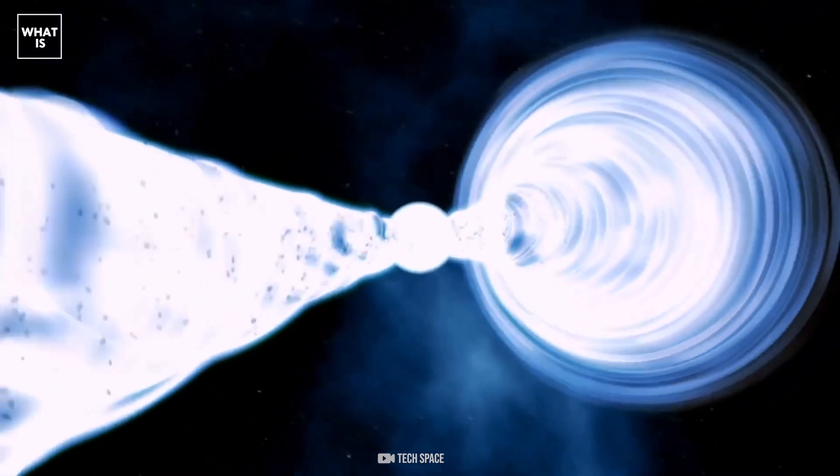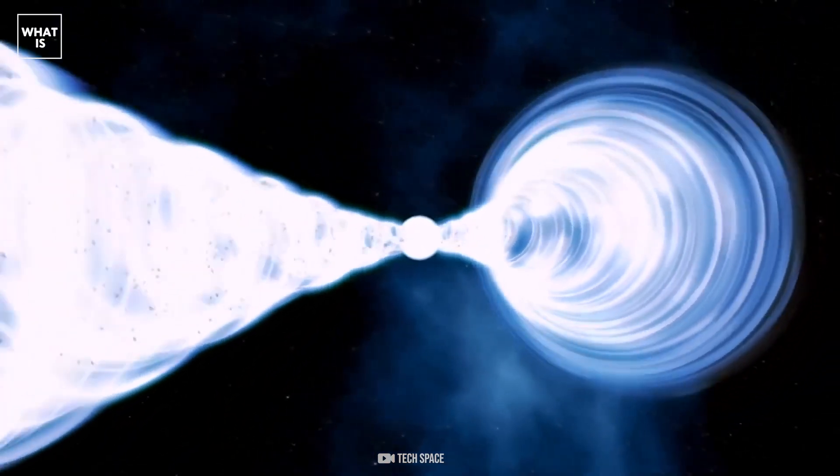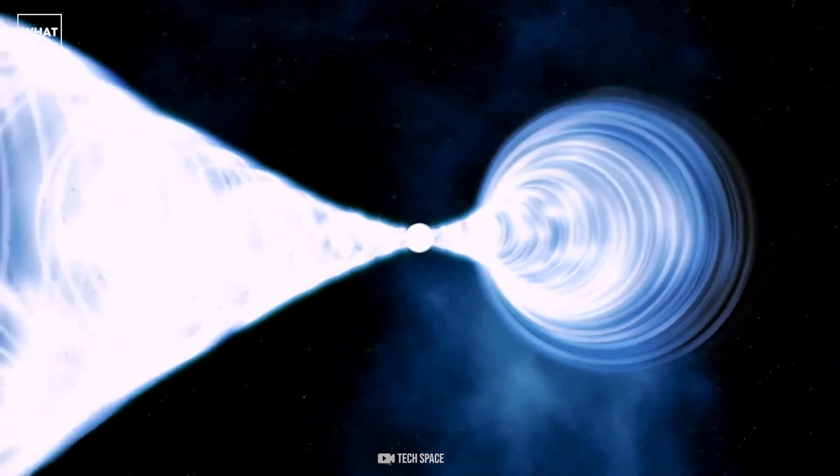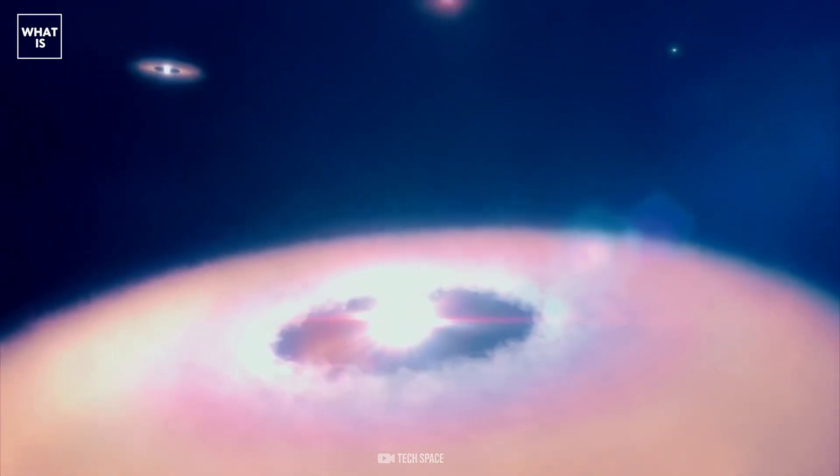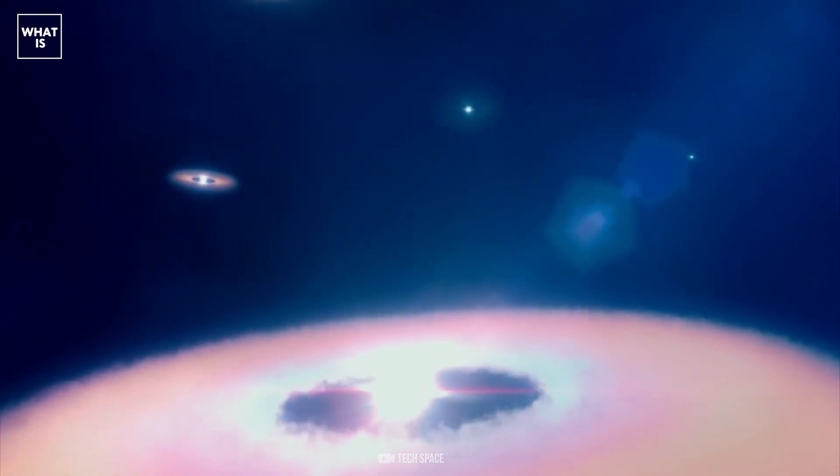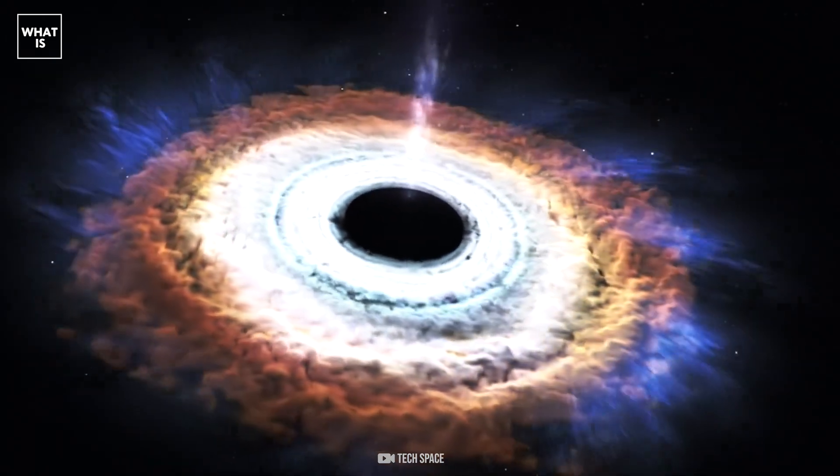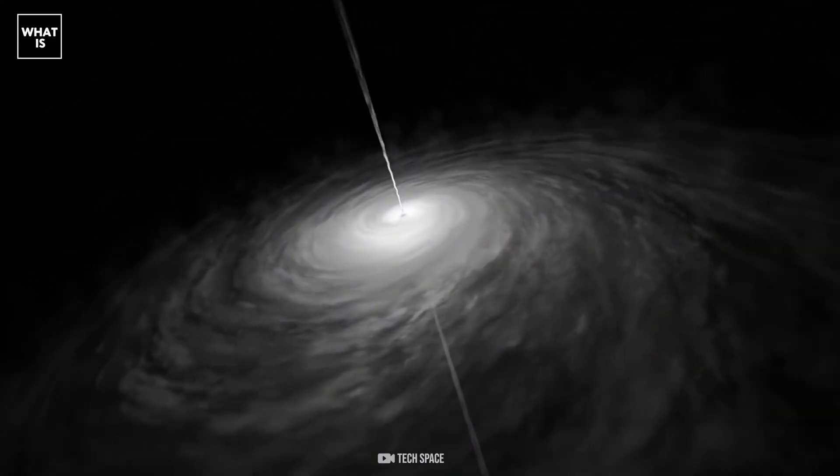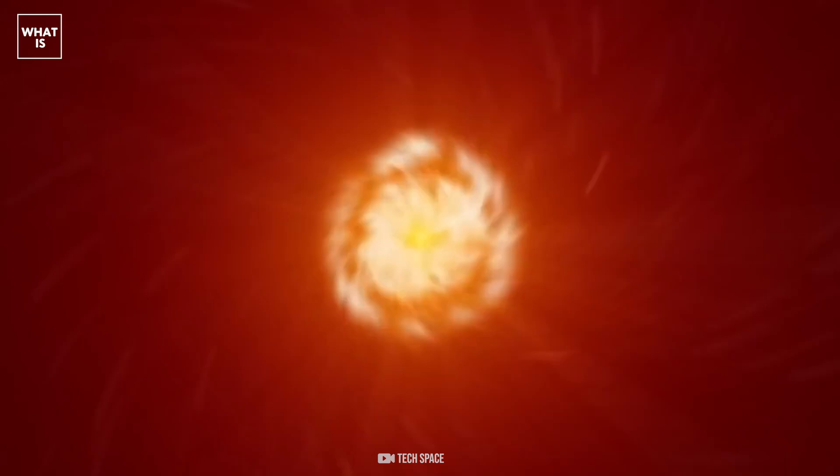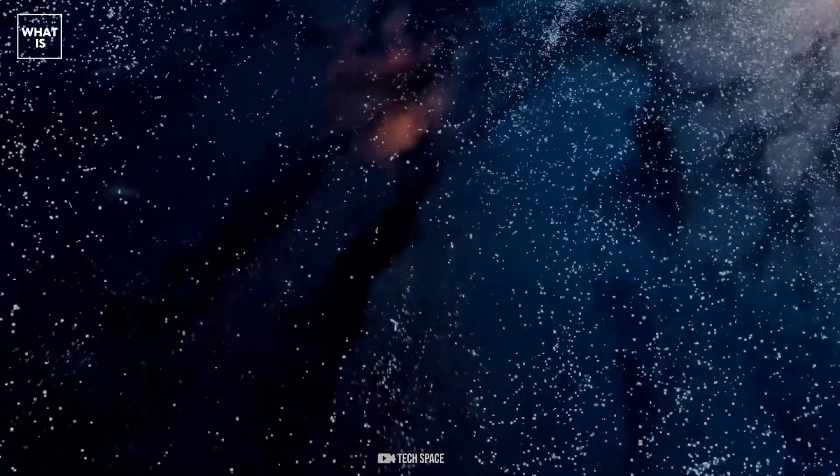Imagine a sphere of such monstrous mass that you can only break away from its surface at the speed of light. This is a black hole. Its radius is called gravitational. If all the matter of the Sun is compacted into a sphere with a radius of three kilometers, it will turn into a black hole.